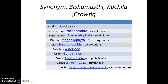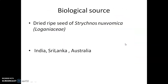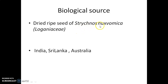In Bengali we call it the Kuchila plant. Regarding biological source: Nux Vomica consists of dried ripe seeds of Strychnos Nux Vomica Linn., belonging to family Loganiaceae. The genus Strychnos means 'poisonous' in Greek, whereas the species name Nux Vomica indicates a nut with vomiting effect — so it is a kind of emetic nut.